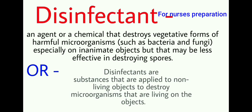What are disinfectants? A disinfectant is an agent or a chemical that destroys the vegetative form of harmful microorganisms such as bacteria and fungi, especially on inanimate objects, but may be less effective in destroying spores. Another definition: disinfectants are substances that are applied to non-living objects to destroy microorganisms living on those objects.